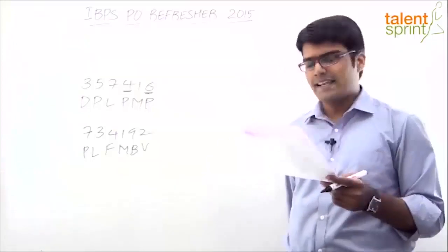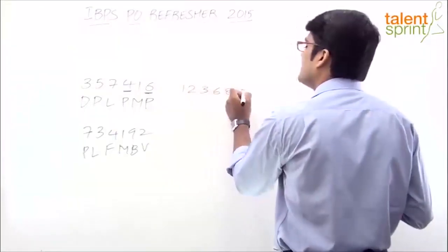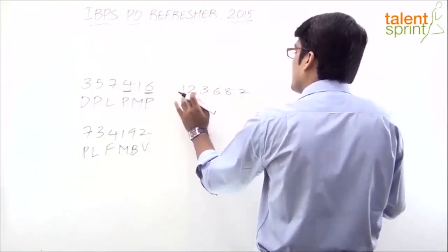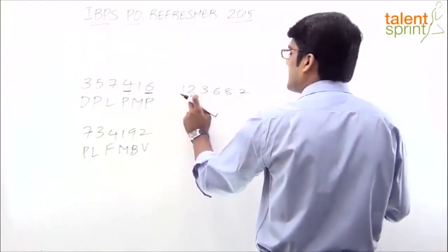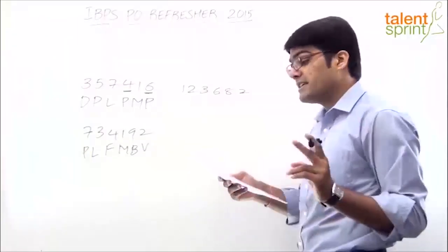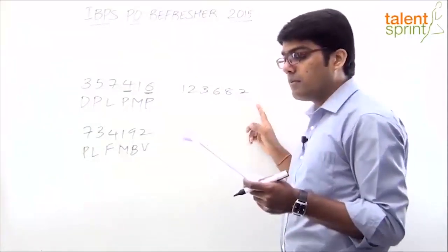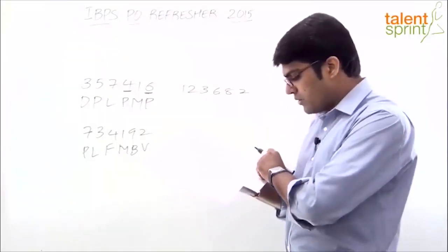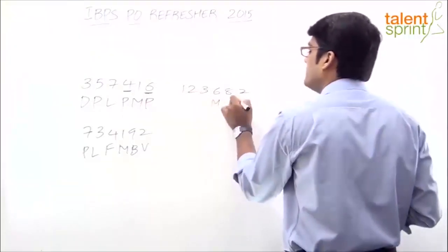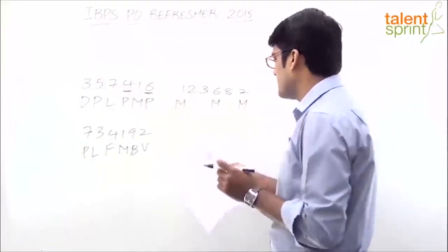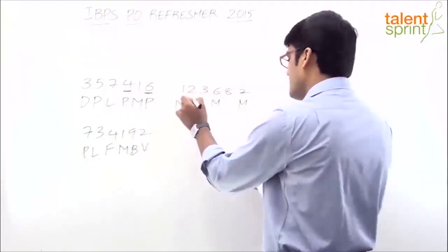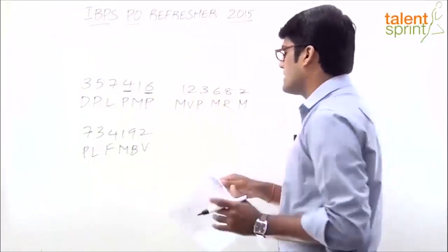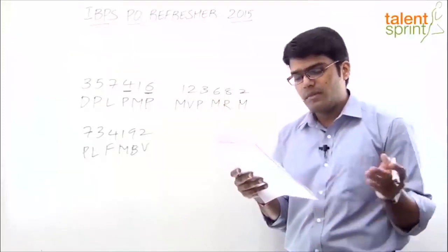Similarly, the third question: 123682. The fourth digit is 6, which is even, and the last digit is 2, also even — so the first condition is satisfied. The second condition requires both the first and second digits to be odd, but here the second digit is 2, which is even, so only the first condition applies. The first digit is 1, coded as M. So 6 and 2 are both coded as M. The code for 2 is V, code for 3 is P, and code for 8 is R. The answer is M, V, P, M, R, M — which is option 2.